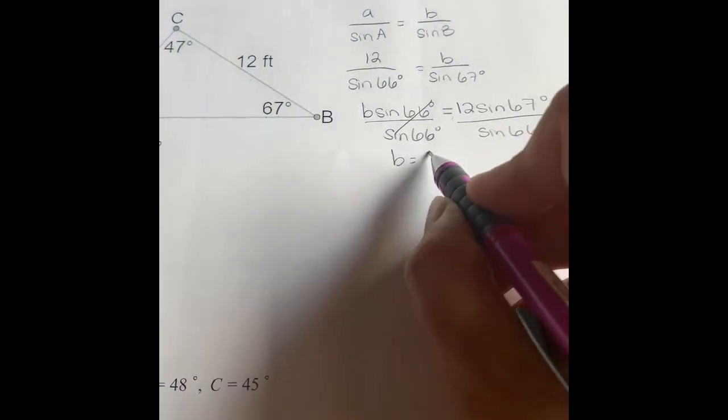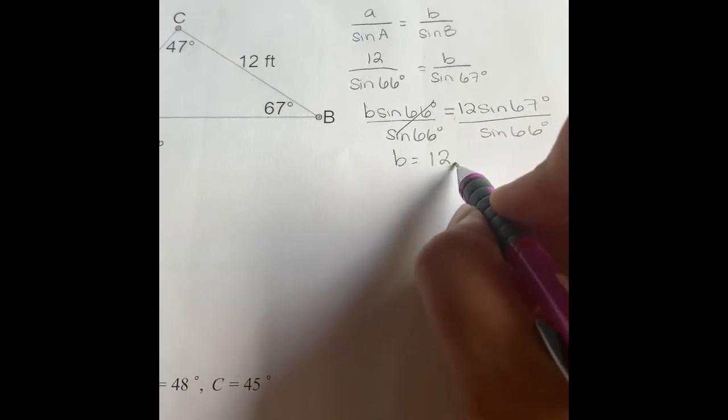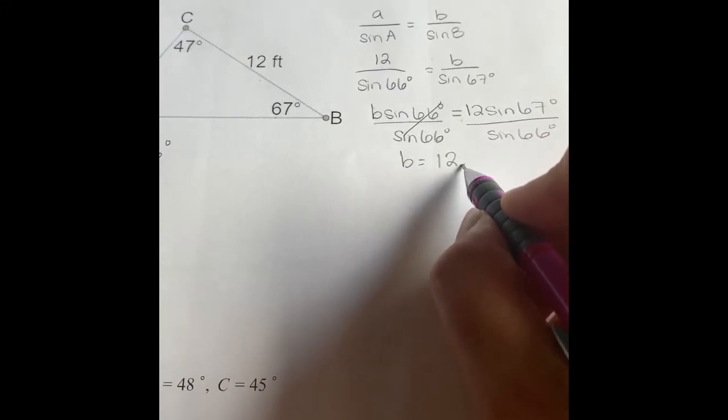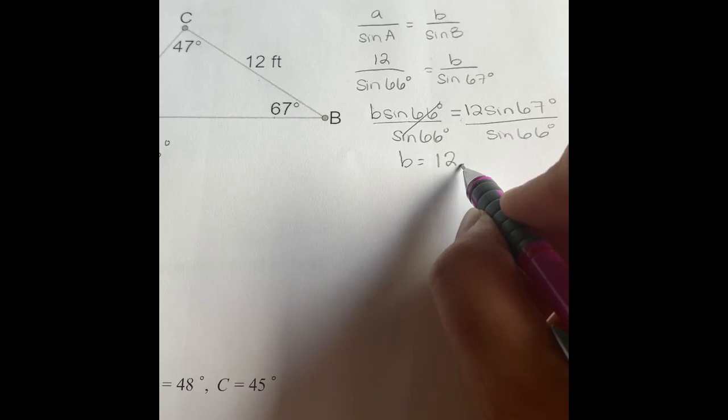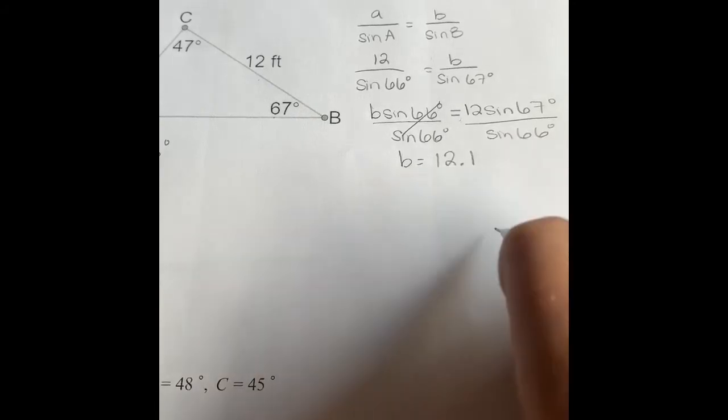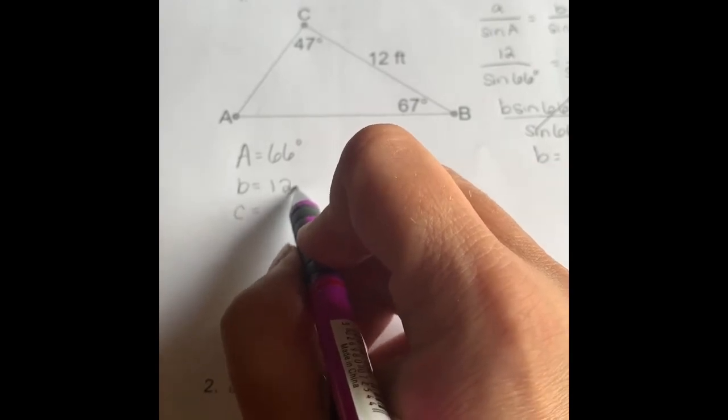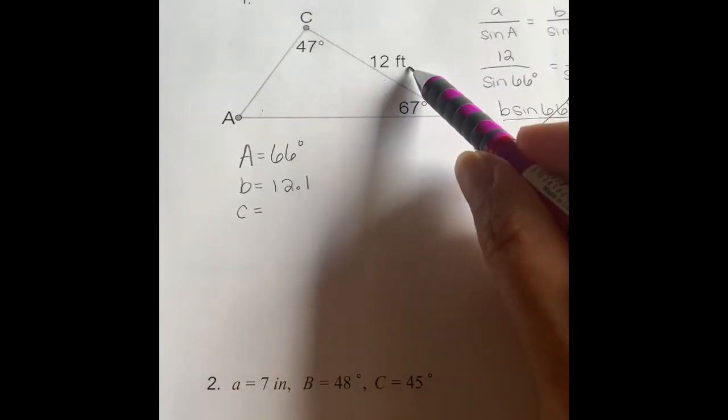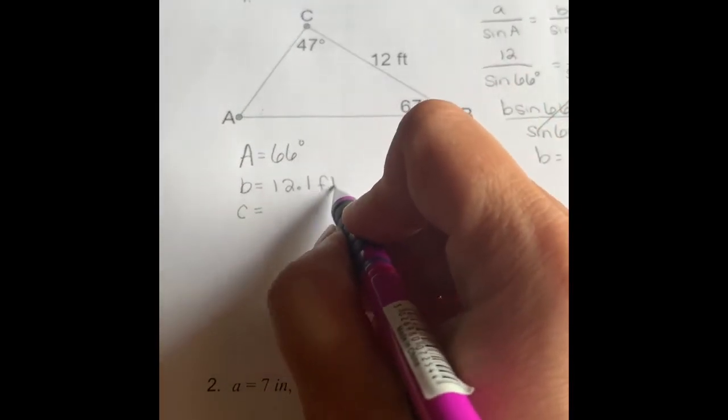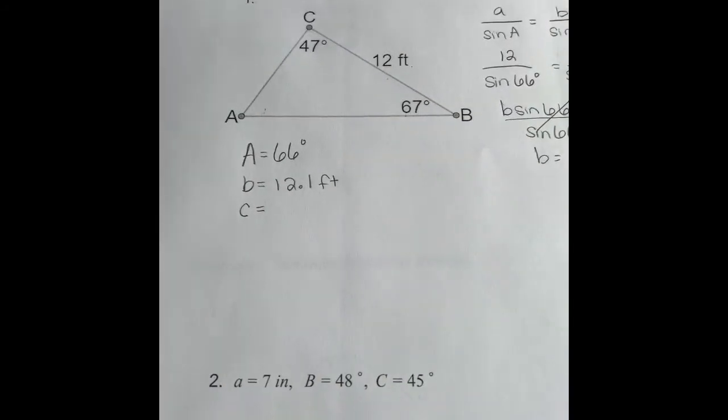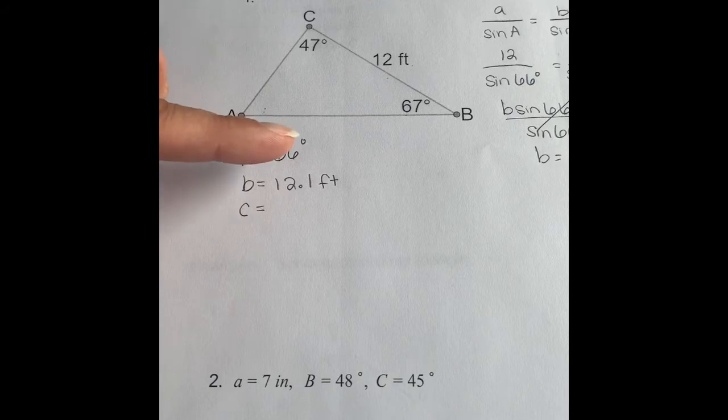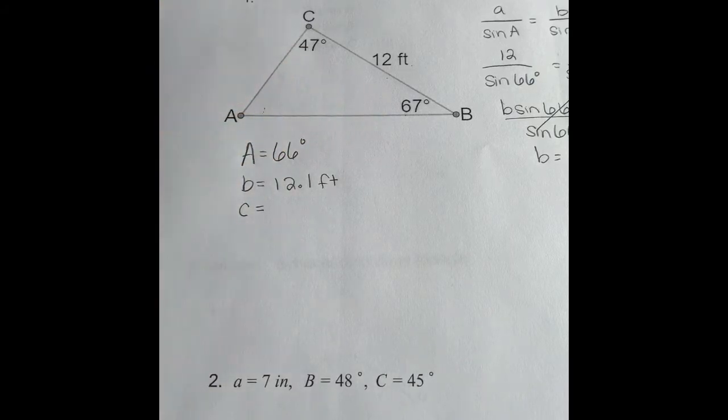So in your calculator, you have 12 times, hit the sine button 67, hit enter, divided by the sine of 66, hit enter. So now you know that side B does not tell us how to round. So let's at least round to the nearest tenth. Never round to the nearest whole number unless you are told to. So 12.1 would be the length of side B. And don't forget, since side A had a measurement of feet, we need to put feet next to our measure. Again, on angle A, we put a degree symbol because both of our angles had degree symbols.